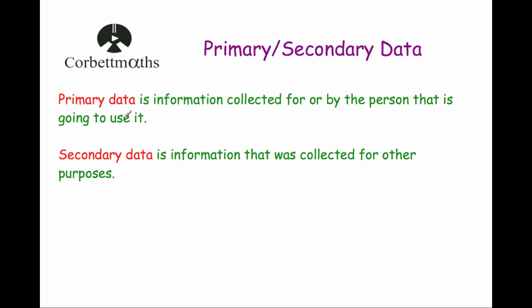So first of all, what is primary data? Primary data is information that's collected by the person or for the person that's going to use it — data collected for a particular purpose. Secondary data is information that was collected for other purposes.